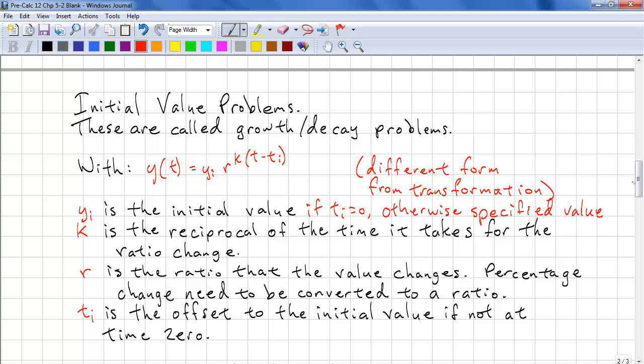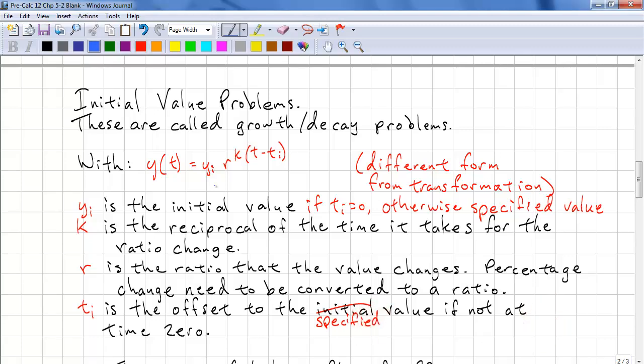k is the reciprocal of the time it takes for the ratio to change. If we're just using whole units, then we ignore k. r is the ratio that the value changes by. And if you have a percentage change, you need to convert this to a ratio, so that means you need to divide it by 100. ti is the offset to the specified value if it's not at time 0. This formula is very similar to our transformed formula. This is c for vertical scaling, this is d for horizontal scaling, and this is h for our horizontal shift.